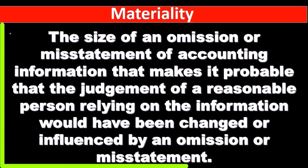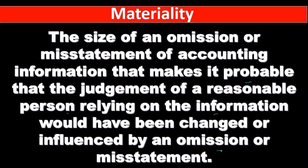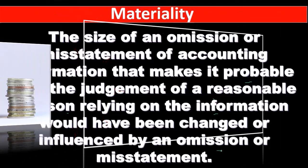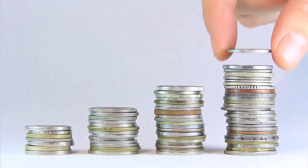Let's go through the definition one more time. Materiality is the size of an omission or misstatement — either something was stated incorrectly or it wasn't stated but should have been — of accounting information that makes it probable (a judgment term, not specific) that the judgment of a reasonable person relying on the information would have been changed or influenced by that omission. We're imagining they're relying on the financial statements for something like an investment decision.